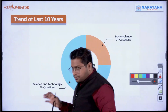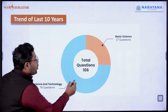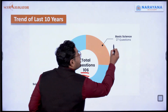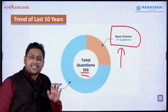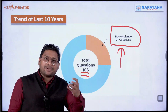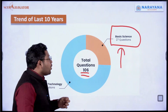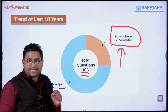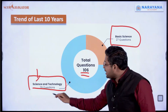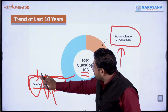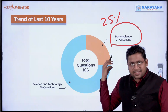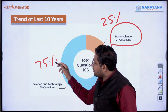Now look at this particular graph. Here you can see all 106 questions asked in the last 10 years. If we look at only basic science questions — your NCRT portion covering physics, chemistry, biology — 27 questions come from basic science. And when we move to the advanced science and technology aspect, there are around 79 questions. So almost 25% is from basic science and the remaining 75% is from the science and technology part.